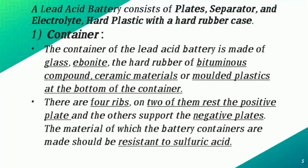The container of the lead-acid battery is made of glass, ebonite, or a bituminous compound. Nowadays it is mostly made of molded plastic. It has four ribs — two of them for the positive plate and the other two for the negative plates. The battery containers are made of a material resistant to sulfuric acid.